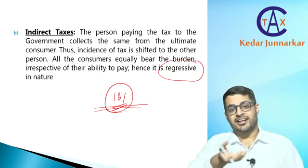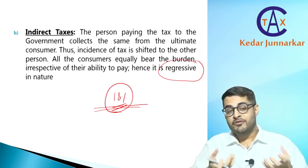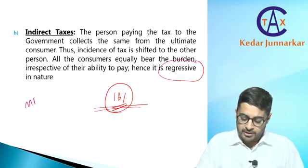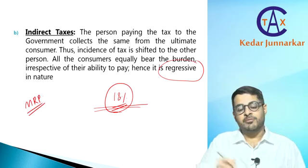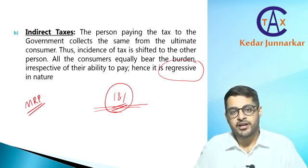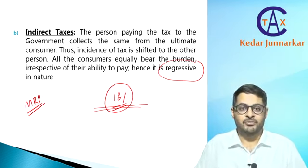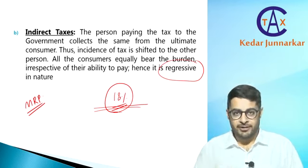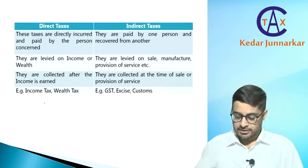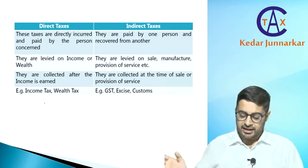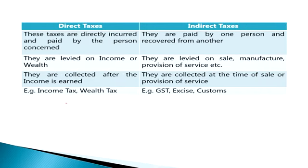Even if you are an ultimate consumer and not registered, you are paying GST — whenever you purchase commodities at MRP (Maximum Retail Price), that MRP includes GST. On almost all day-to-day commodities you are paying GST even if you don't know it, and the supplier is depositing that GST to the government. Now let's go through the difference between direct taxes and indirect taxes.